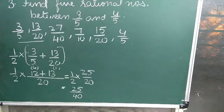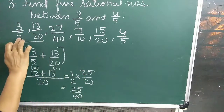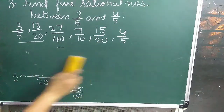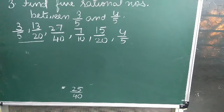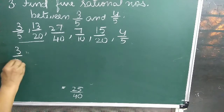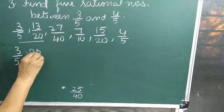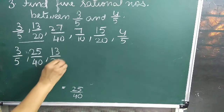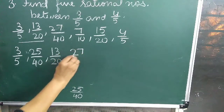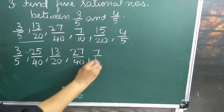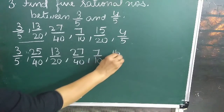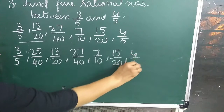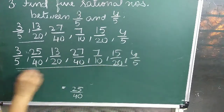So the five rational numbers between 3 upon 5 and 4 upon 5 are: 25 upon 40, 13 upon 20, 27 upon 40, 7 upon 10, and 15 upon 20. This is the answer.